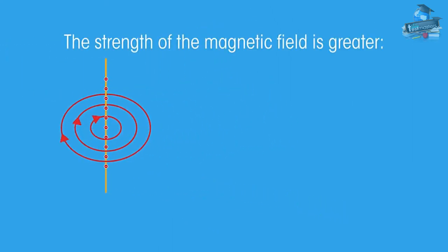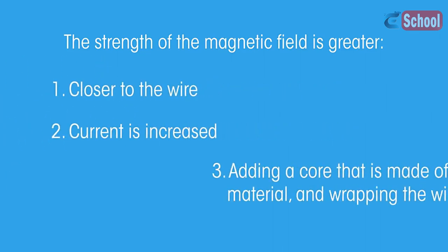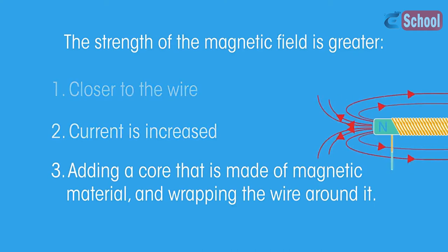The strength of the magnetic field is greater when it's closer to the wire, if the current is increased, or by adding a core that is made of magnetic material and wrapping the wire around it. This is known as a solenoid.